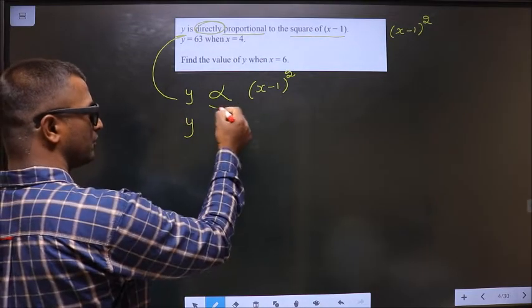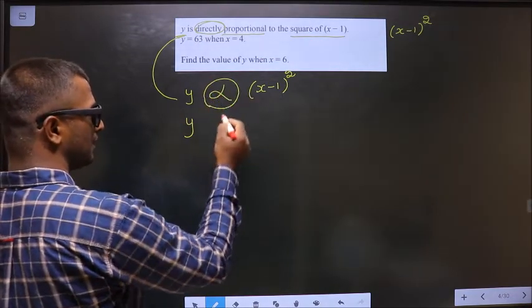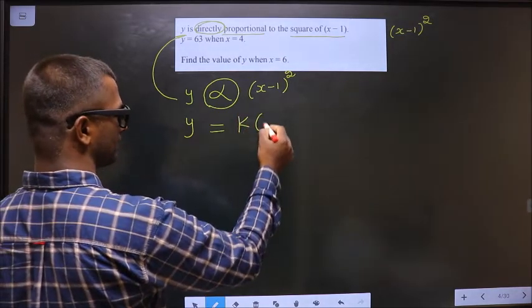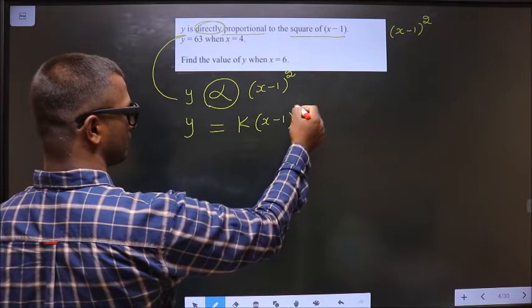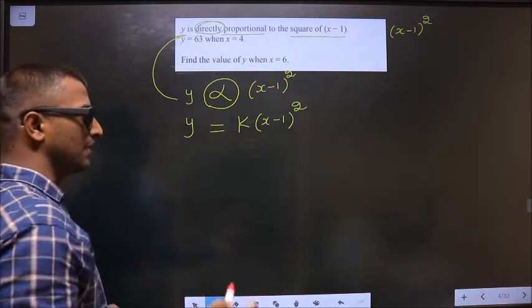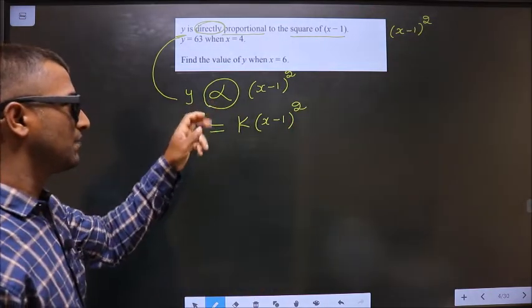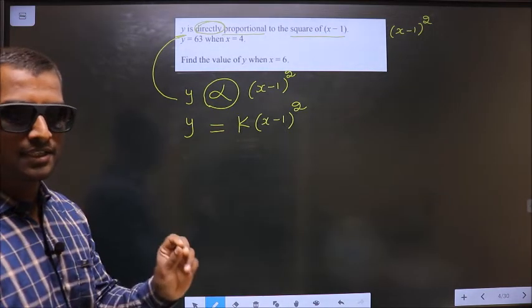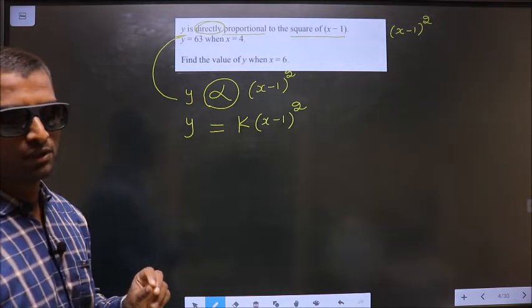Now to remove this proportionality symbol and replace it with equal to, I should put a constant k. Whenever you want to remove the proportionality symbol and replace it with equal to, you should put the constant k. It is a rule.